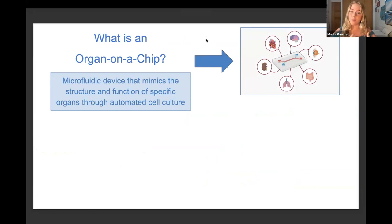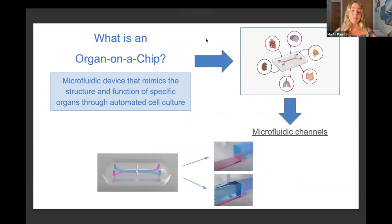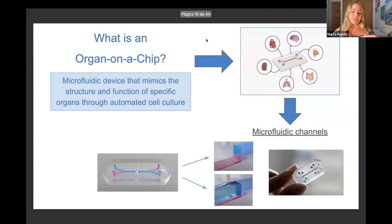One of the most important components of these devices is what we call microfluidic channels because they contain fluids such as nutrients, blood, and even the cells that we are trying to cultivate. Just to get a general idea of the size of these chips, here we have an image of a real organ-on-a-chip where, as you can see, it's pretty small.